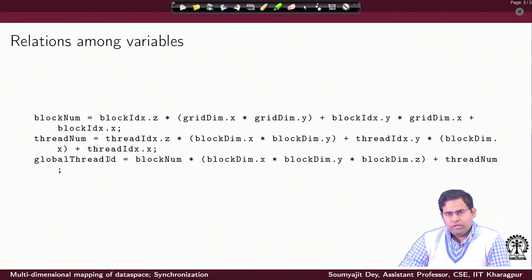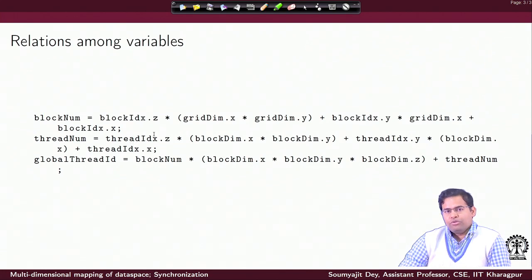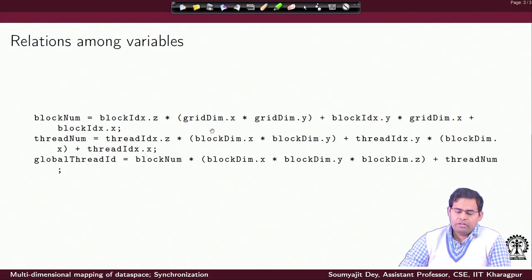When the kernel is launched and executing, you have single instruction multiple thread as your model of computation. That is the same piece of code — the kernel — getting executed by all the threads whose packing has been decided by the launch parameters. Using these kinds of expressions, every thread can compute a unique global thread ID. This is the most important thing for distinguishing each thread. For every thread, I have a unique combination of block IDs and thread IDs with which it can compute a unique global thread ID.